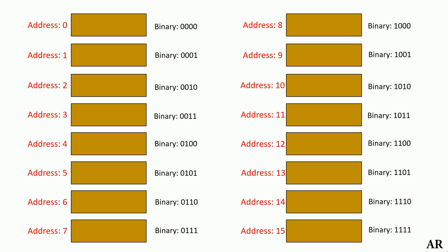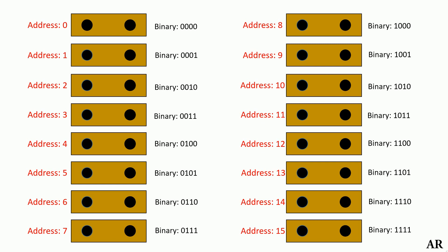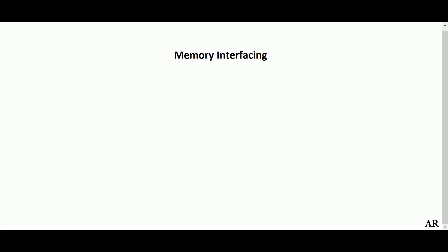Now consider how many students can sit. If each bench can support 2 students, the total capacity of the classroom is 16 × 2 = 32. This analogy relates directly to memory size calculation: the students are the data, the benches are the memory locations, and the unique IDs given to each bench are the memory addresses. The classroom size of 32 can be split into 16 benches × 2 students per bench, where 16 corresponds to benches and 2 to the number of students in each bench.